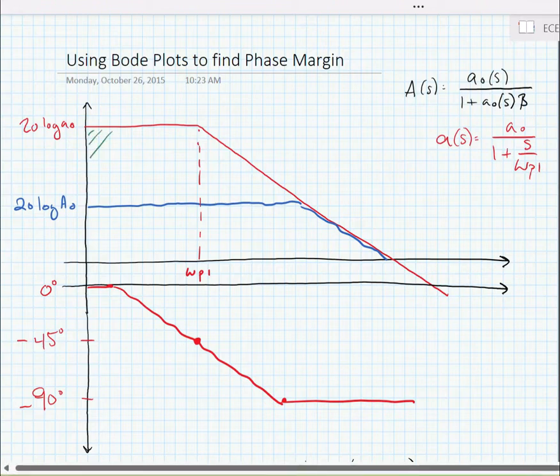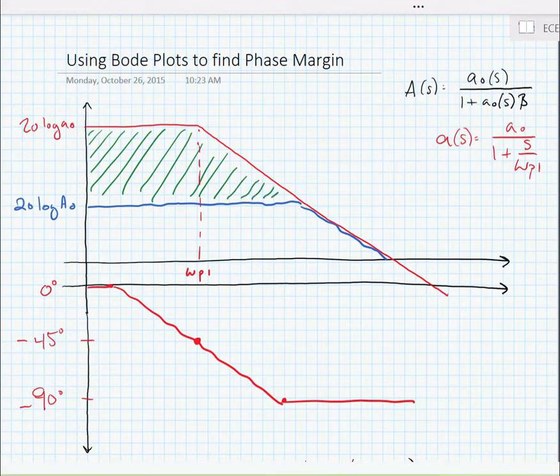And the area between these two curves that I'm filling in right now, this is actually the loop gain. So this has a transfer function of T of s. T of s is equal to little a of s times beta as we described before.